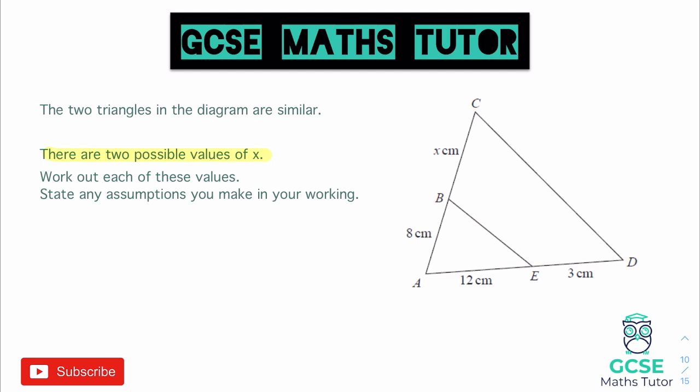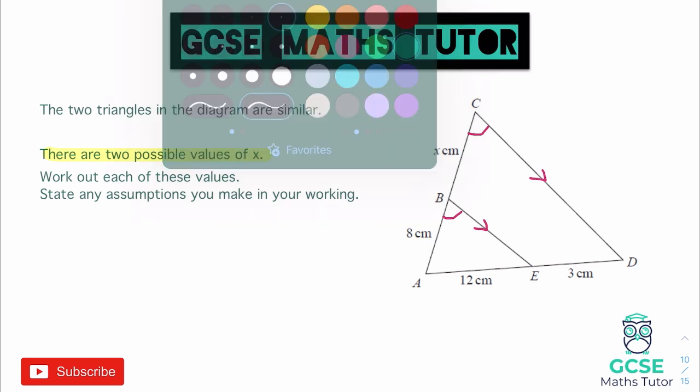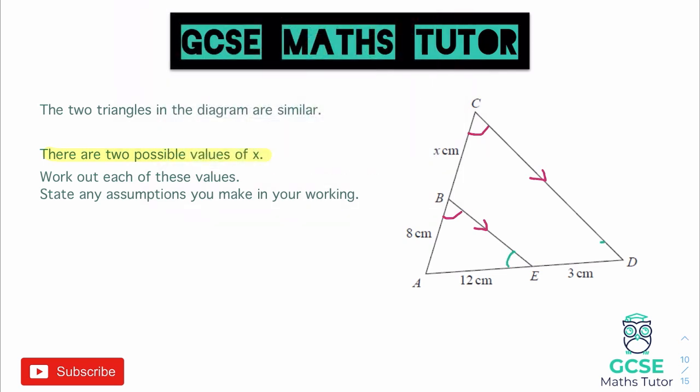You can see that the triangles are here drawn in the diagram. Usually, this line here, we would normally be told that it is parallel to this line here, and that would only give us one possible value of x in this question, because if they were parallel, this angle here and this angle here would be equal, and as well as that, this angle here and this angle here would be equal, and that would only give us one possible solution.